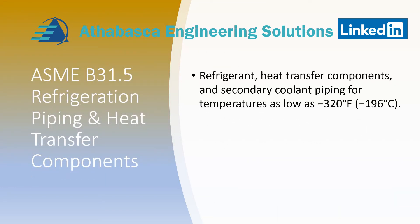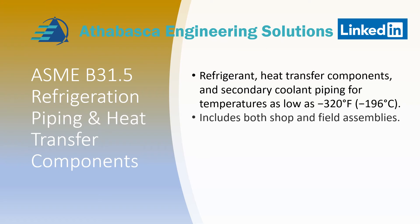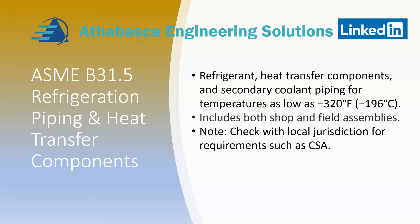We've now completed B31.4 and B31.8 — those are the pipeline specs. We're going to move into service specs. ASME B31.5 covers refrigeration piping and heat transfer components. This specification is mostly used in the United States; CSA is more commonly used in Canada. B31.5 covers refrigeration and heat transfer components and secondary coolant piping for temperatures as low as minus 196 degrees Celsius. It includes shop and field assemblies. Note that you need to check with your local jurisdiction for requirements.